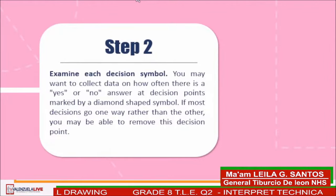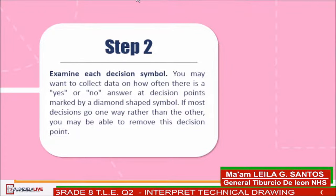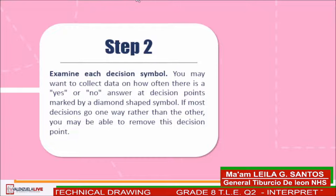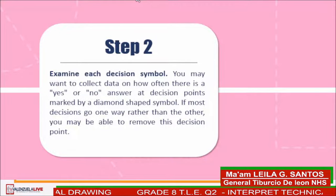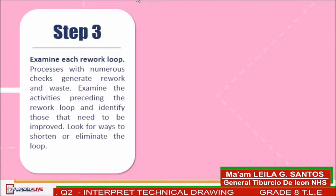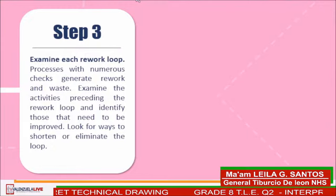Step 2: Examine each decision symbol. You may want to collect data on how often there is a yes or no answer at decision points marked by a diamond-shaped symbol. If most decisions go one way rather than the other, you may be able to remove this decision point. Step 3: Examine each rework loop. Processes with numerous checks generate rework and waste. Examine the activities preceding the rework loop and identify those that need to be improved. Look for ways to shorten or eliminate the loop.